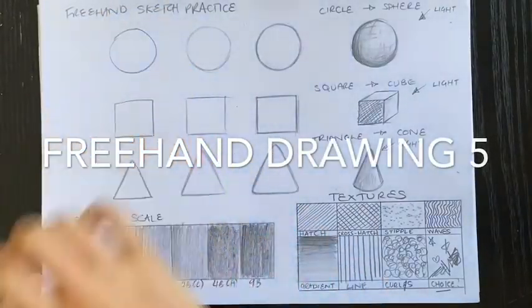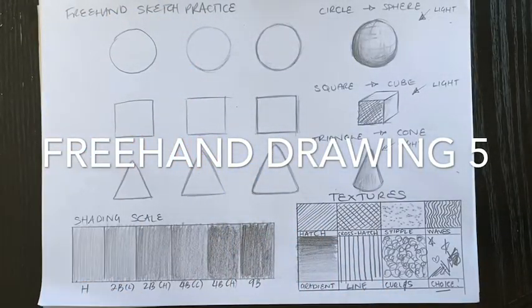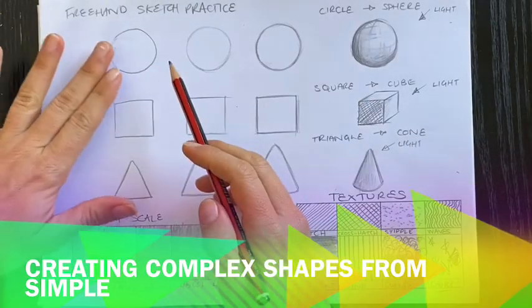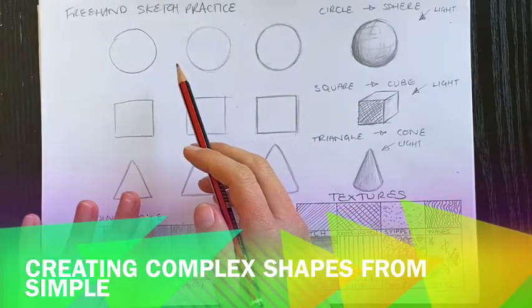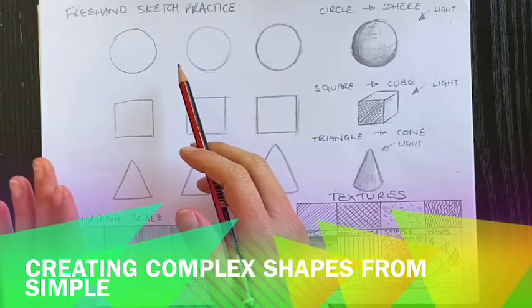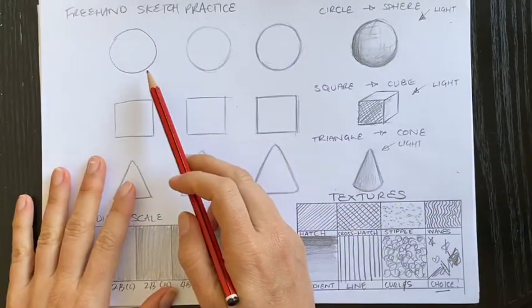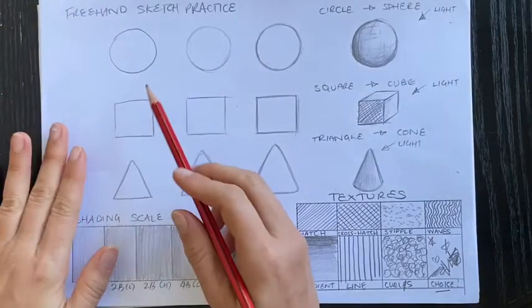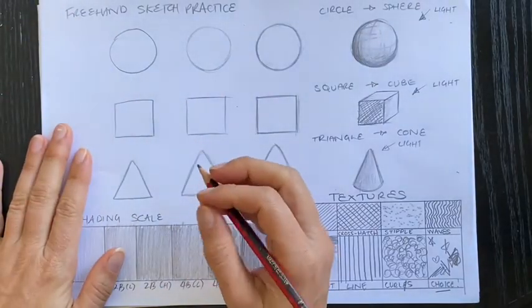So we have one area left on our page here. What I would like to do is try and combine some shapes. As I said earlier, most things around us are made from basic shapes. If we break down the object, we should be able to create a more complex shape from its smaller subsequent parts.